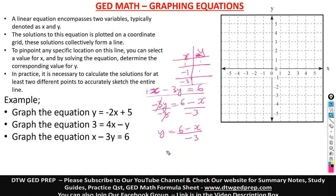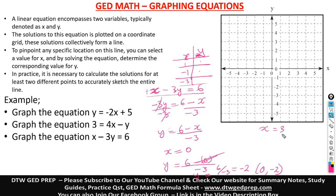So our first point is X at zero, Y at negative 2. For our next point, let's make X equal to positive 3. So we do Y equals (6 minus 3) over negative 3. 6 minus 3 gives us 3, then 3 divided by negative 3 gives us negative 1. So our second point is X as 3, Y as negative 1.